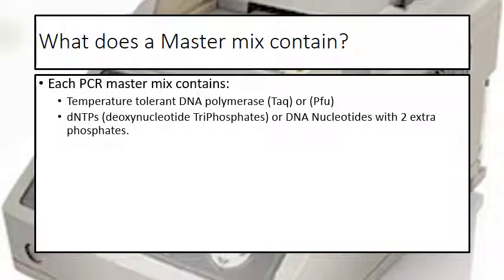The next thing we're going to need is something called dNTPs — deoxynucleotide triphosphates. Go ahead and highlight that or write it down because it's going to pop up several times. These are just the building blocks — essentially DNA nucleotides — with two extra phosphate groups. Those two extra phosphate groups are going to allow them to be incorporated into a DNA molecule.